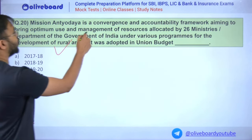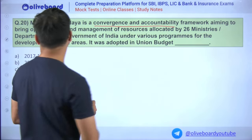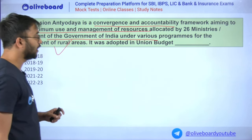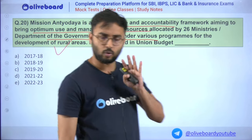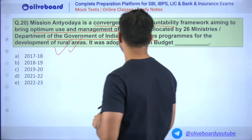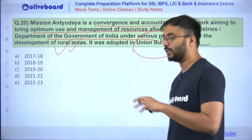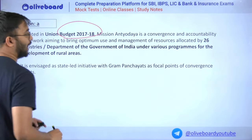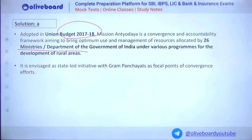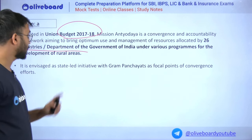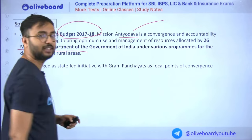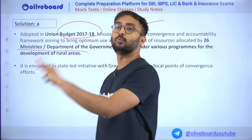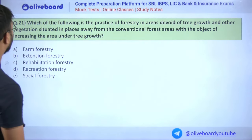Question 20: Mission Antyodaya Yojana is a convergence and accountability framework aiming to bring optimum use and management of resources allocated by 26 ministries and departments of the Government of India. It was adopted in the 2017–18 union budget. Antyodaya means 'poorest of poor' — the scheme provides government support and resources to those who are the poorest of poor.